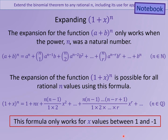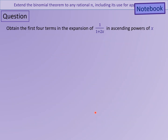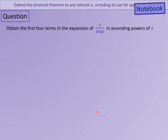This expansion formula is also important because it only works where the x values are between 1 and minus 1. If you have any other x values this expansion doesn't work — it's not true. We'll come back to that and see why it's important when we try to use this expansion as an approximation tool. So let's have a look. What I'd like you to do is obtain the first four terms in the expansion of 1 over 1 plus 2x in ascending powers of x. That's the sort of question you may get in your exam — I'll give you a chance to get that down in your notebooks and then we'll work through the answer.